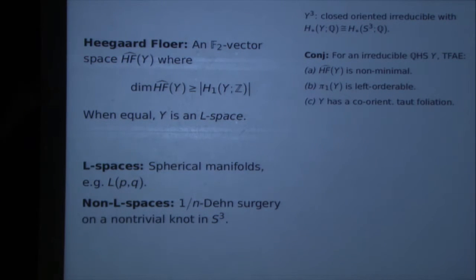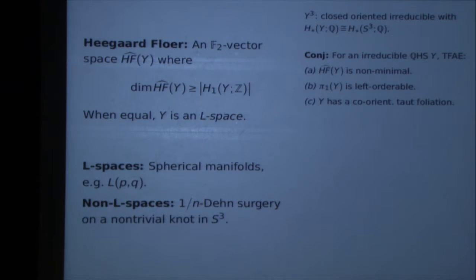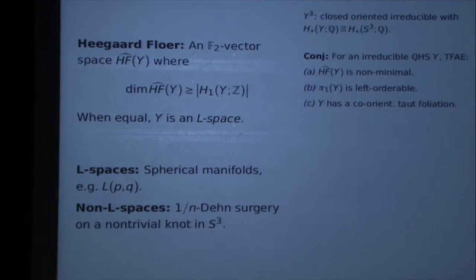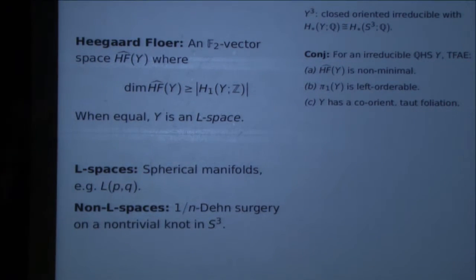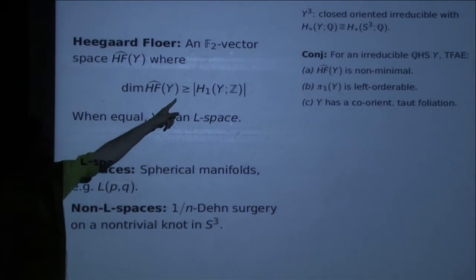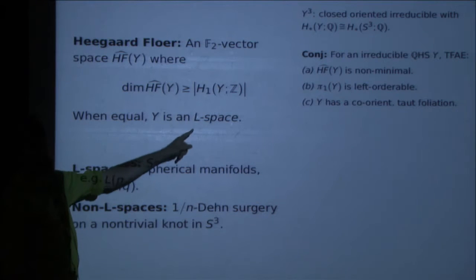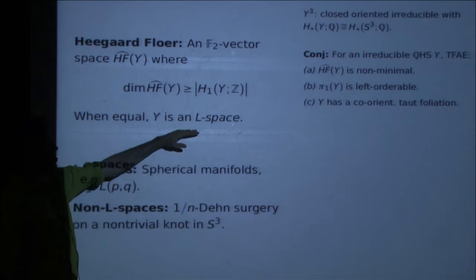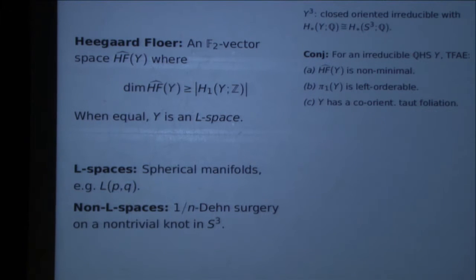This has many beautiful properties and has been used to prove many important results, but for today let's just take this as a definition — well, not as a definition, but this is basically all you need to know. Since we have this inequality, there are going to be two kinds of manifolds: those for which this is an equality, which will be called an L-space, and those for which it is a strict inequality, which will be called non-L-spaces.